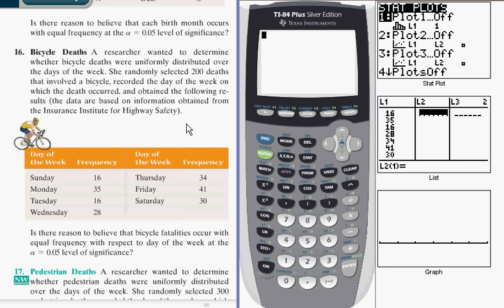And it suggests, with the range of data from the lowest value being 16 to the highest value being 41, that maybe the deaths don't occur uniformly with respect to the day of the week, that maybe the deaths occur more frequently on some days than on other days. So that's the setup for doing this particular type of hypothesis test.